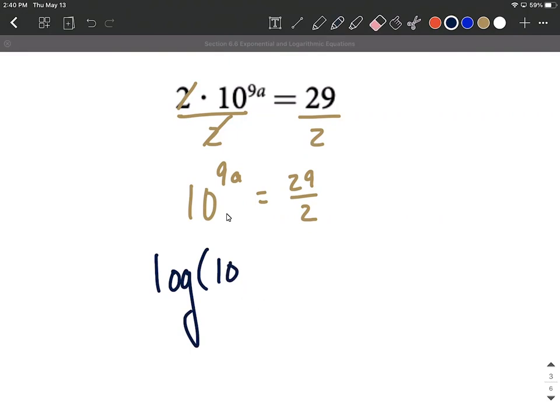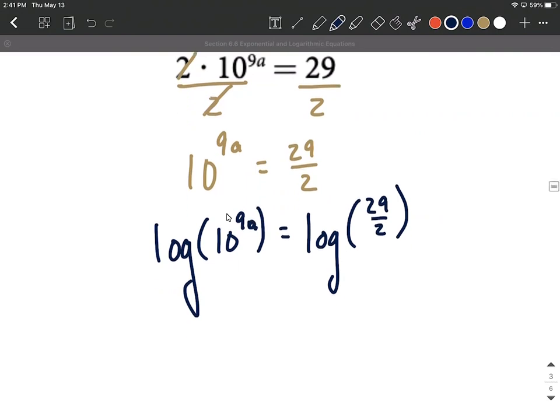And then 9a is still attached up in the exponent. So I'm applying a common log to both sides. This is allowable based on logarithmic functions being one-to-one. So we're allowed to do that.